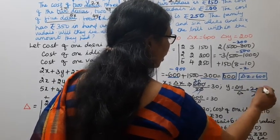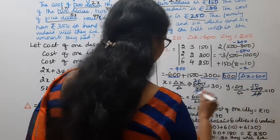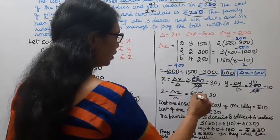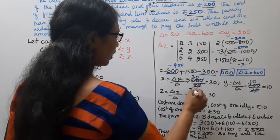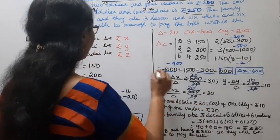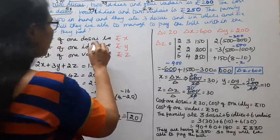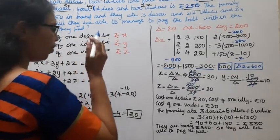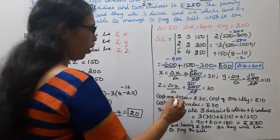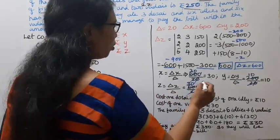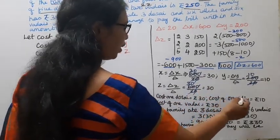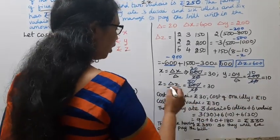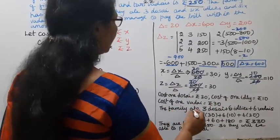Now x = delta x / delta = 600 / 20 = 30. y = delta y / delta = 200 / 20 = 10. z = delta z / delta = 600 / 20 = 30. So the cost of 1 dosai is Rs. 30, cost of 1 idli is Rs. 10, and cost of 1 vadai is Rs. 30.